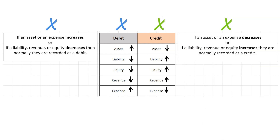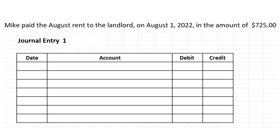If you can't remember that and you have trouble, this is a nice little chart — you can actually screenshot it and save it for future reference, which may be helpful. Now we'll put some examples to work and see how you list debits and credits inside of a journal entry.